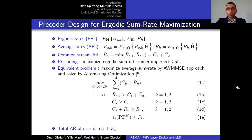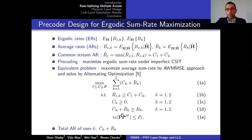We consider a precoder design for ergodic sum rate maximization. For the problem of maximizing the ergodic sum rate, an equivalent problem of maximizing the average sum rate is solved by the average weighted MMSE approach, which is then solved by the alternating optimization algorithm. Note that we use a quality of service constraint for each user in our optimization.